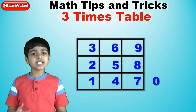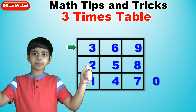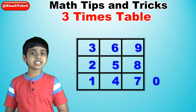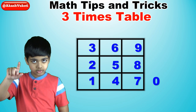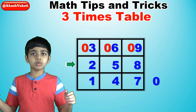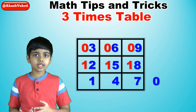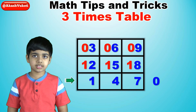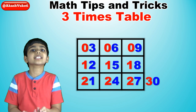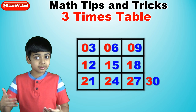Now for the tens digits, we're going to split this up into three sections: top row, middle row, bottom row. For the tens digits in the top row we write zero — so zero, zero, zero. For the tens digits in the middle row we write one — so one, one, one. And for the bottom row tens digits we're going to write two — two, two, two. And then we write a three next to the zero to get thirty, which you may know is three times ten.